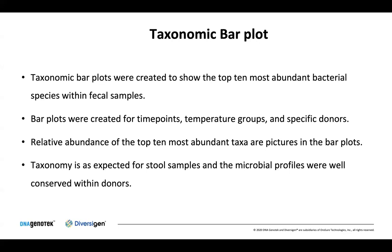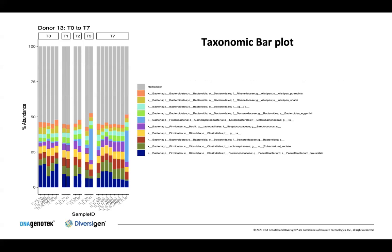Taxonomy is as expected for stool samples, and the microbial profiles were well conserved within donors. Looking at the bar plot for donor 13, we started at T0 and took time points at T1, T2, T3, and T7. At T3 for room temperature, there was a shift in the microbial profile, and we decided to take a closer look to see if these changes were significant.